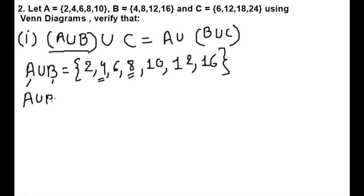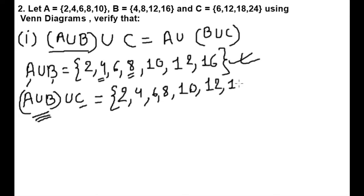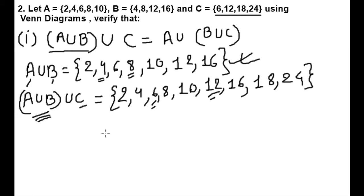Now A∪B∪C means we have to write elements of A∪B and elements of C one time without repetition, including all elements. Elements of A∪B are 2,4,6,8,10,12,16. From C, 6 and 12 are already in the set, so we add 18 and 24. Therefore A∪B∪C = {2,4,6,8,10,12,16,18,24}.